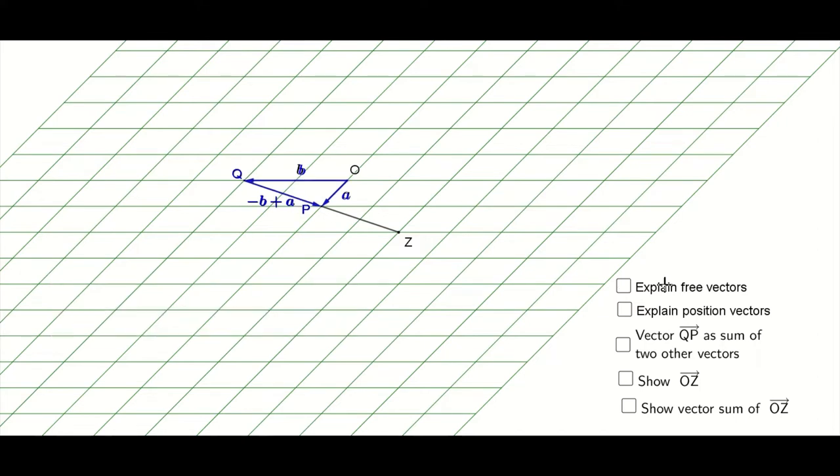Vector QP is actually a sum of two other vectors. If you can see, B is this direction, moving from O to Q. But then, from Q to O, it's actually minus B, then plus A.